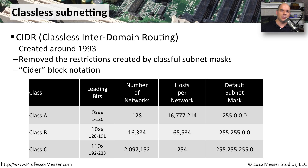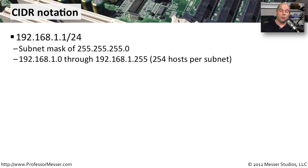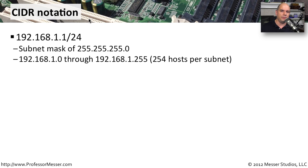In 1993, we got rid of automated subnetting based on IP address class and instead started creating blocks to differentiate between subnets. The old idea of Class A, B, and C with automatic default subnet masks went out the window. Now you can decide how many bits you're going to use in your subnet mask — you might follow old class-based standards, but you have the flexibility to use different numbers of bits. This is denoted with CIDR block notation, like a slash 24 at the end of an address.